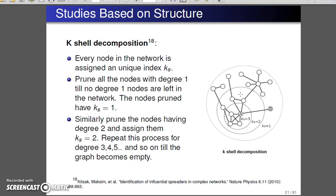As you can see on the screen, there is a network that's provided on the right-hand side. In this case, what they do is they prune all the nodes with degree 1. There are no degree 1 nodes are left.